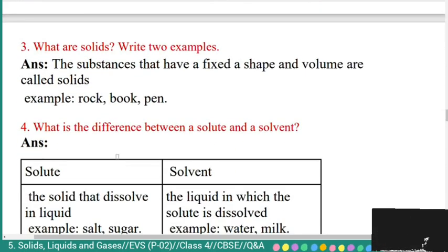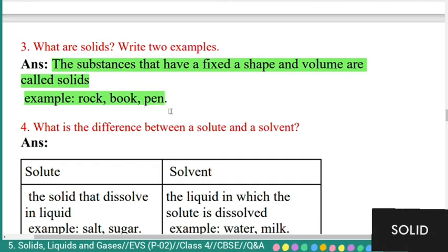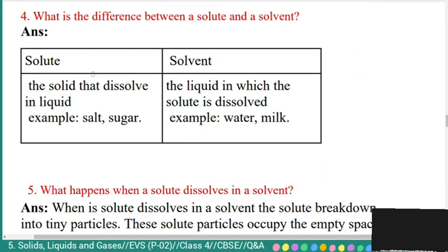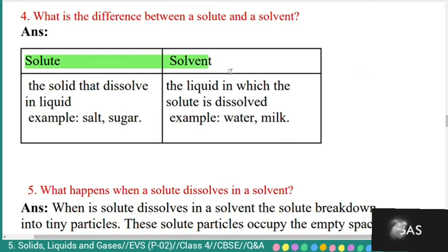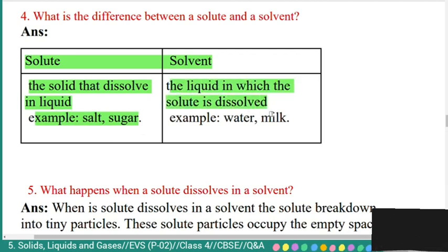Question 3: what are solids? Write two examples. Answer: substances that have a fixed shape and volume are called solids. Examples: rock, book, pen. Question 4: what is the difference between a solute and a solvent? Answer: a solute is the solid that dissolves in a liquid — example: salt and sugar. A solvent is the liquid in which the solute is dissolved — example: water and milk.